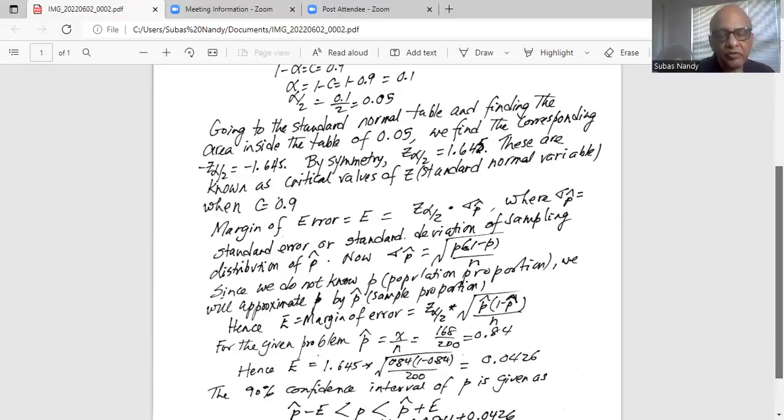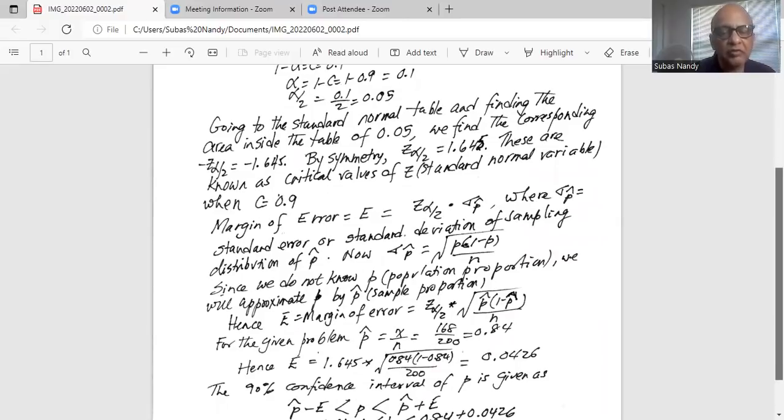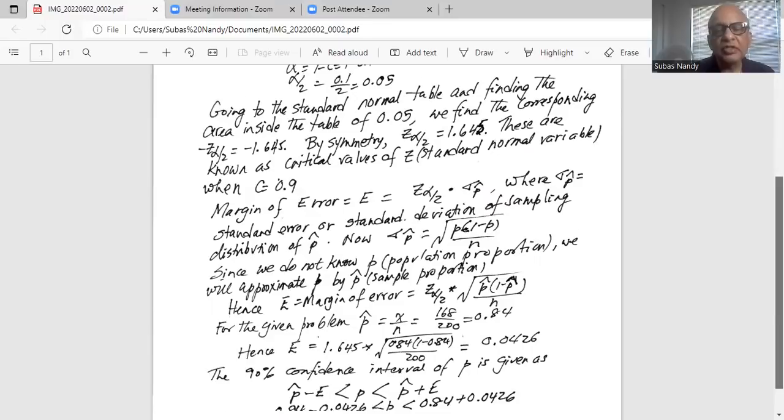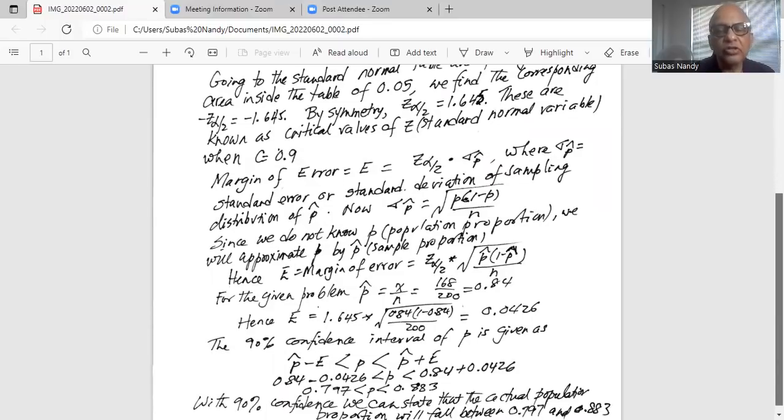Now I substitute this value of p hat in the equation for margin of error, which is 1.645 times square root of 0.84 multiplied by in parenthesis 1 minus 0.84, close the parenthesis, divided by 200, everything under square root, which works out as 0.0426.